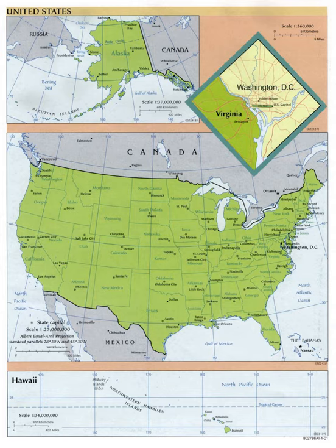In 1777, the thirteen colonies that had declared independence from Great Britain one year earlier agreed to the formation of a confederation of states with an extremely limited central government. A new national frame of government came into force in 1789, when the current U.S. Constitution replaced the Articles. This Constitution incorporates the doctrine of the separation of powers, whereby the federal government is divided into three branches, as well as concepts of federalism, describing the rights and responsibilities of state governments and of the states in relationship to the federal government.